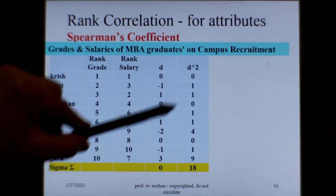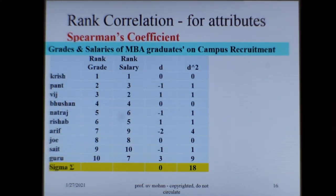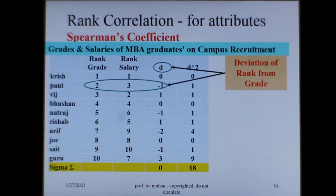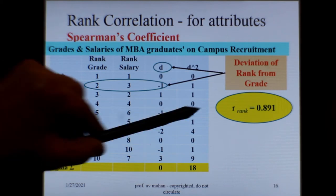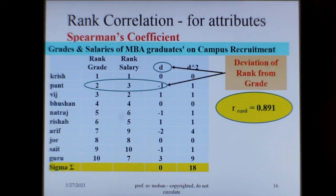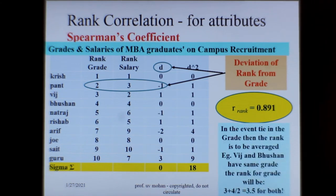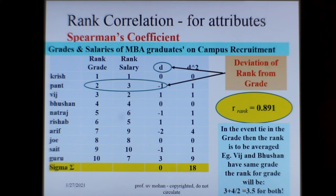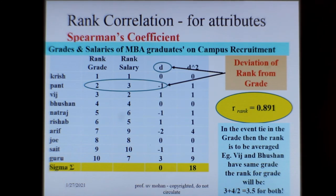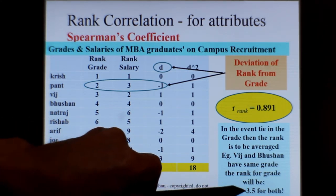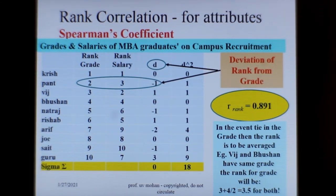Using d-squared values and applying the formula, you get the rank correlation coefficient as 0.891. That is how you arrive at Spearman's coefficient of correlation. In situations where students have the same grade, you add both their ranks and divide by 2 — giving a common rank of 3.5. That is how you assign a rank when two persons have the same grade.